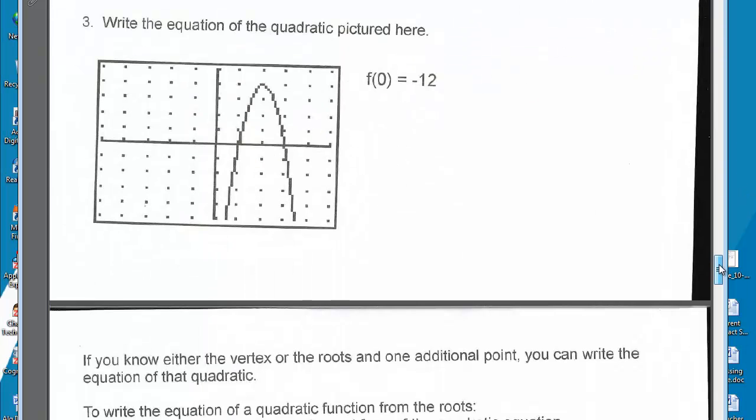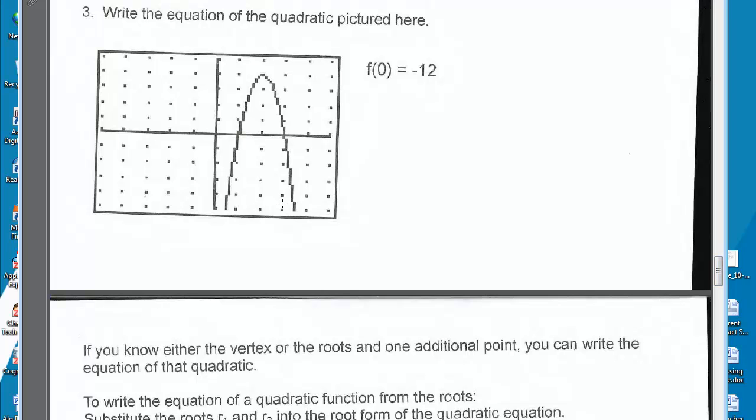Write the equation of the quadratic pictured here. We are given x is 0, y is negative 12, one of my roots is 1, and the other root is 3.